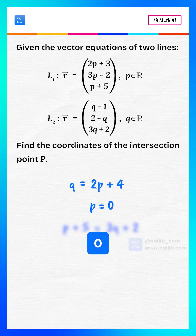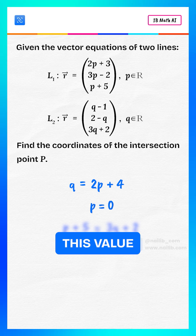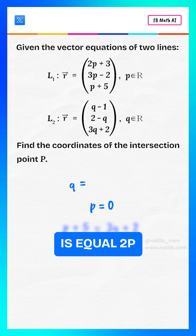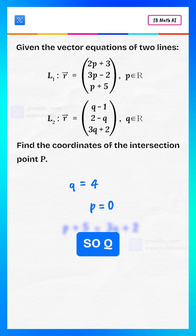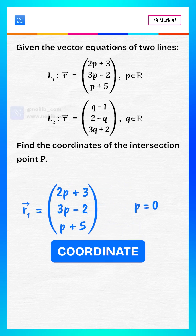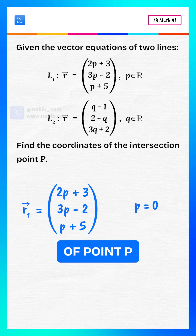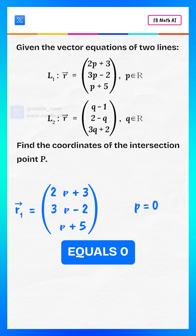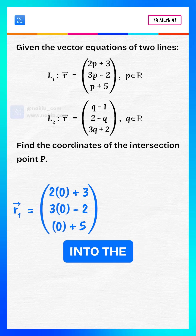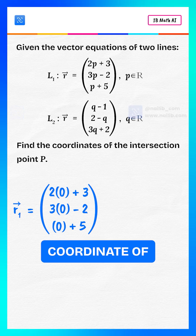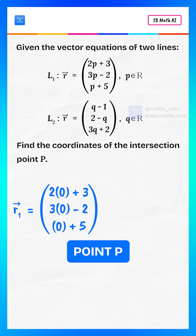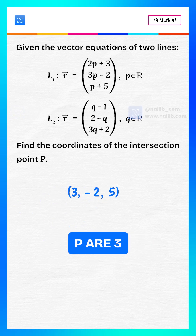Now that we have P = 0, substitute this value into Q = 2P + 4, so Q = 4. Now for the coordinate of point P, we substitute P = 0 into the vector equation of line L1 and we get the coordinate of point P. Thus, the coordinates of point P are (3, −2, 5).